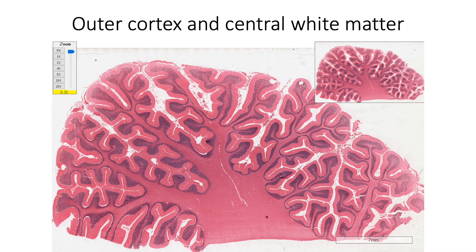Cerebellum shows an outer convoluted cortex containing neurons and a central core of white matter containing ascending and descending fibers.